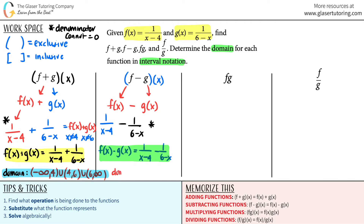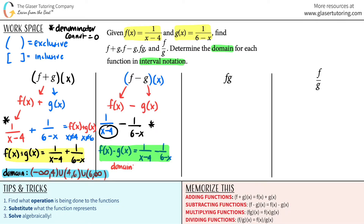Now let's do the domain. Always go back to the unsimplified version. X cannot equal 4, because that would make the first denominator zero. X cannot equal 6, because that would make the second denominator zero. All other numbers are fair game, so: negative infinity to 4, union 4 to 6, union 6 to positive infinity. The domain is the same as the addition one.